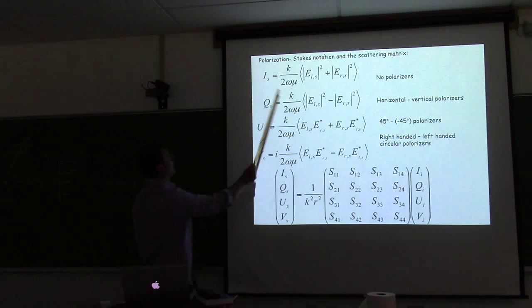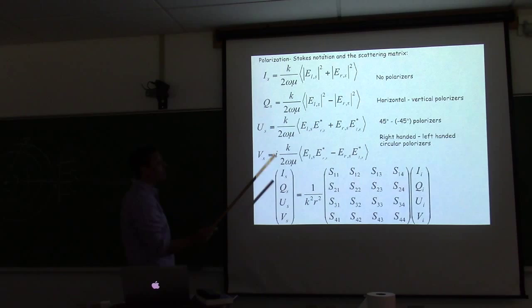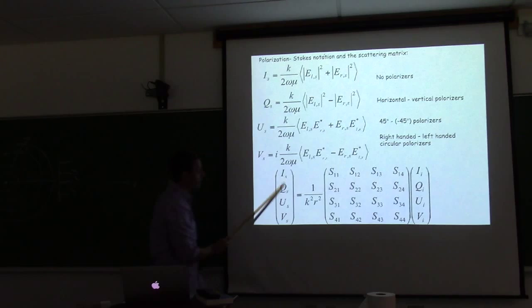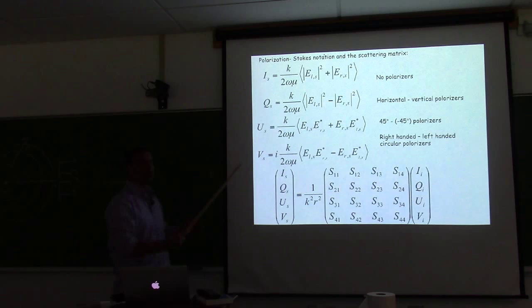You can get all the information about polarization from this. This is all related to what you saw in Ken's talk — it's directly related to the output. The only thing I want you to remember is: this is the Mueller matrix you saw before. This is the incident, this is the scattered. The type of code you're going to get today can also calculate polarization results simply from the output.